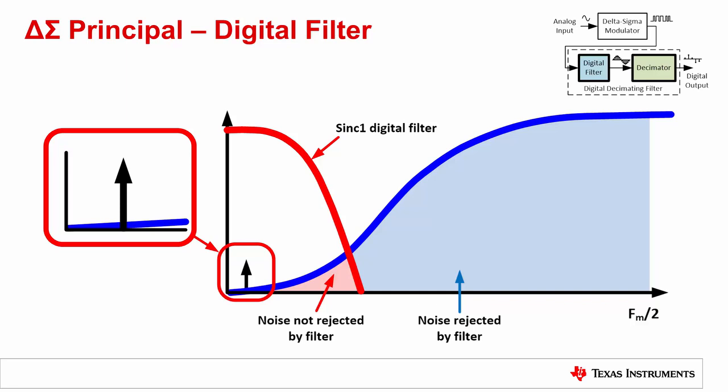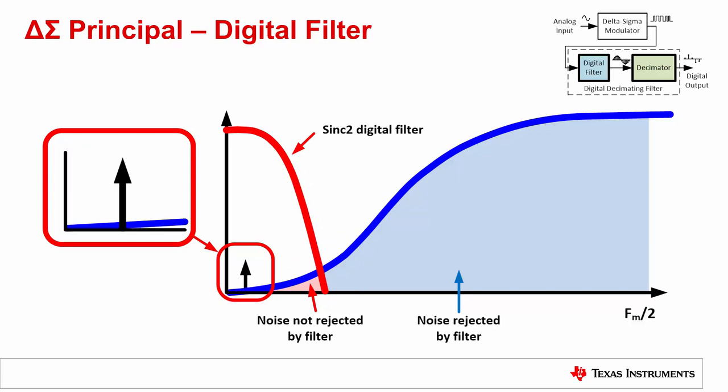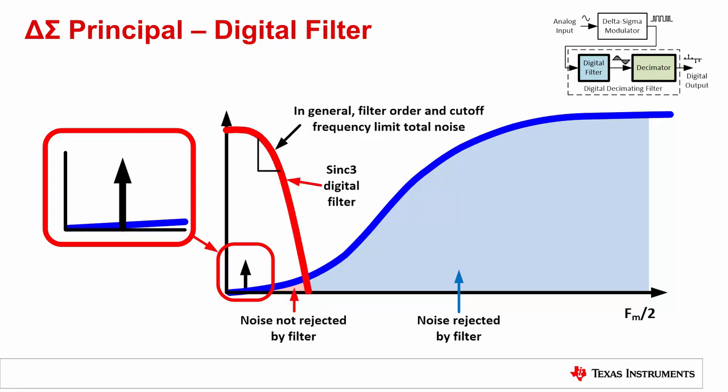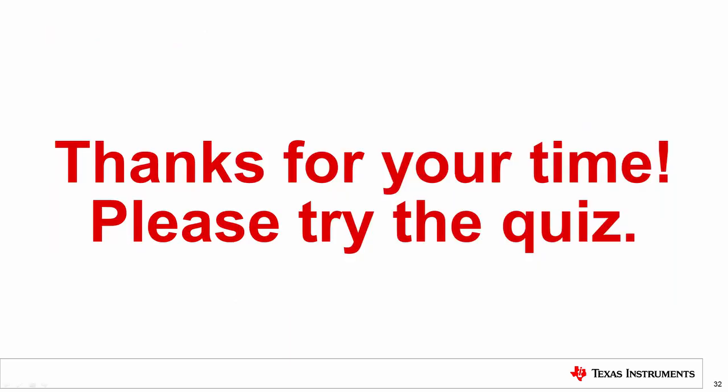Using a higher-order filter further reduces the noise. A SINC2 filter rejects more noise than SINC1 due to a sharper passband transition, and a SINC3 filter reduces noise even further. In general, choosing a higher-order filter or reducing the cutoff frequency are two approaches to minimizing quantization noise. For DC-optimized delta-sigma converters, the filter cutoff frequency may be as low as a few hertz; for wideband delta-sigma converters it may be hundreds of kilohertz. Comparing noise specifications between low- and wide-bandwidth delta-sigma converters, the wider-bandwidth device generally has more noise. That concludes the theory part of this video — thank you for your time. Continue watching to try the quiz and check your understanding.